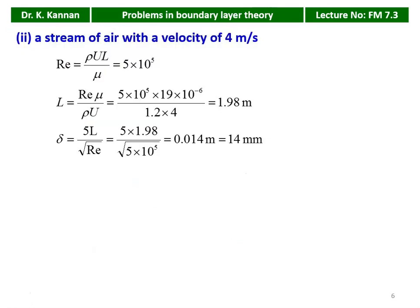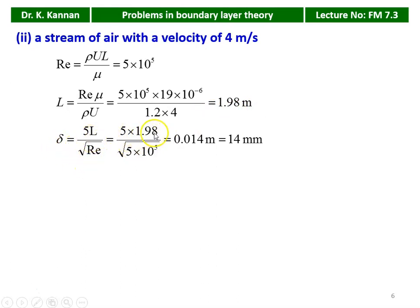Case 2 — air at 4 m/s. Again Re = ρUL/μ = 5 × 10⁵. The laminar length L = (5 × 10⁵ × 19 × 10⁻⁶) / (1.2 × 4) = 1.98 m. Boundary layer thickness δ = 5 × 1.98 / √(5 × 10⁵) = 0.014 m = 14 mm. For air, the boundary layer thickness is 14 mm.